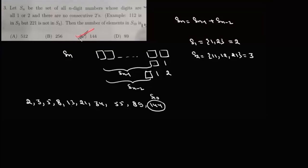Now in question number 3, it says let SN be the set of all n-digit numbers whose digits are all 1 or 2 and there are no two consecutive 2s. Then the number of elements in S10 is... That's a very standard question in recurrence relation and we have solved many questions like no consecutive heads.